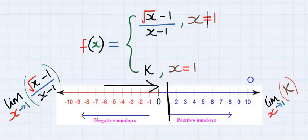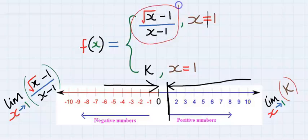For the continuity of this function, the upper part must be equal to the lower part of the function. That is, the left hand limit must be equal to the right hand limit. This is the condition for continuity.